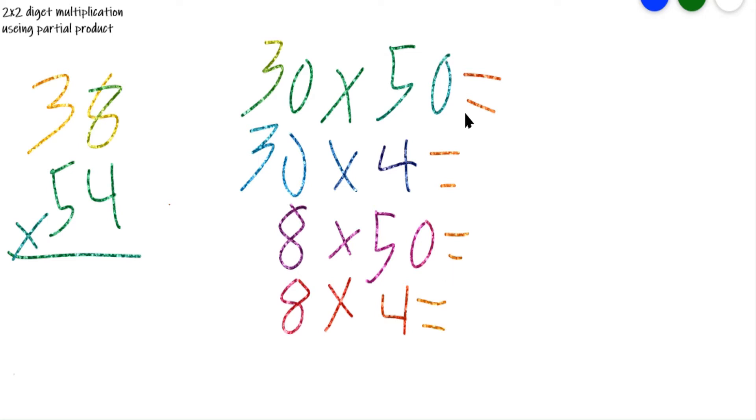And let's use partial product to figure out how many Legos I have in total. So 30 × 50 is 1500, 30 × 4 is 120,